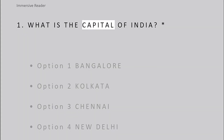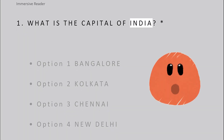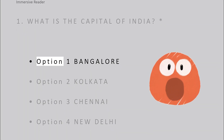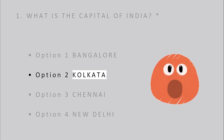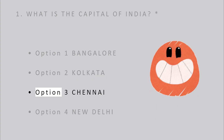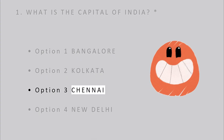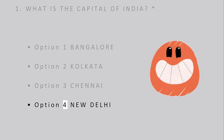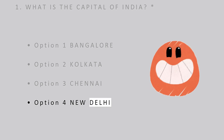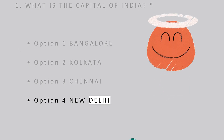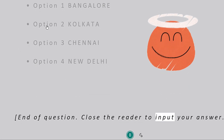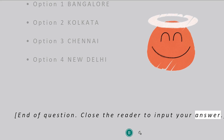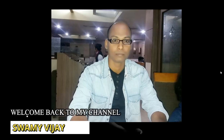Question one: What is the capital of India? Option one: Bangalore. Option two: Kolkata. Option three: Chennai. Option four: New Delhi. End of question. Close the reader to input your answer.